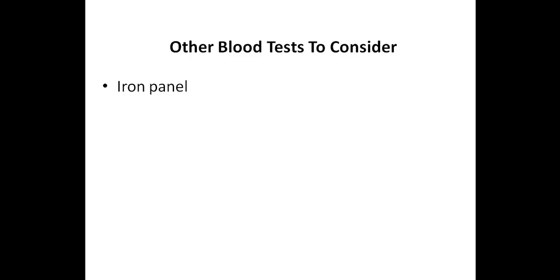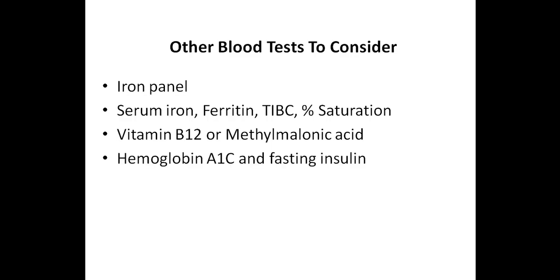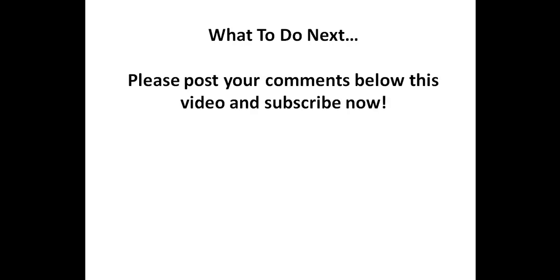Although I discussed seven blood tests to consider in this video, there of course are other blood tests some people will need. I commonly recommend an iron panel to my patients, consisting of serum iron, ferritin, total iron binding capacity, and percent saturation. Vitamin B12 or methylmalonic acid is another marker to consider. Blood sugar imbalances can perpetuate the inflammatory component of autoimmunity, and thus markers such as hemoglobin A1c and fasting insulin can be valuable. RBC magnesium is another blood test to consider. In addition to Epstein-Barr, there are other viruses which can trigger autoimmunity, including cytomegalovirus and herpes simplex. Celiac disease is an autoimmune condition, and doing a celiac panel is something to consider, especially if you already have another type of autoimmune condition — though if someone has been on a gluten-free diet for a while, this test won't be accurate. Please post a comment below, subscribe, and click on the notification bell for the latest videos.